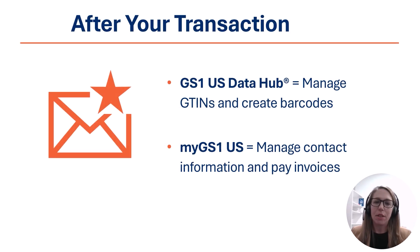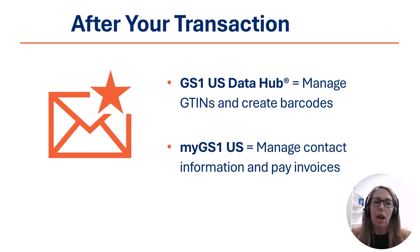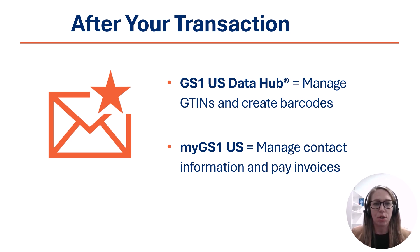After you submit your payment in our store, you should receive an email providing your company prefix number and access to two GS1US platforms: GS1US DataHub, where you will manage your product information and create your barcodes, and MyGS1US, where you can manage your contact information and company settings. Both are accessible with the same login, and you can download the prefix certificate on either platform.